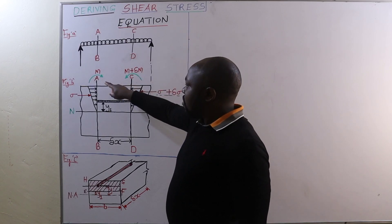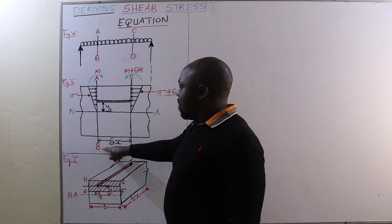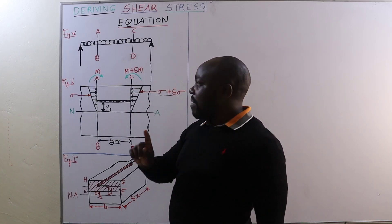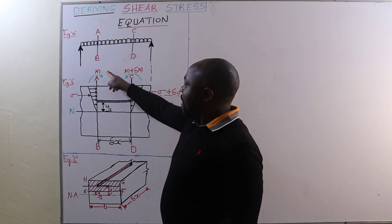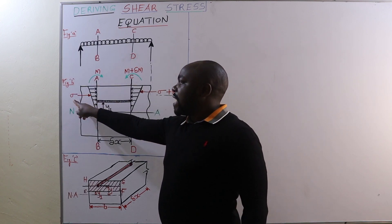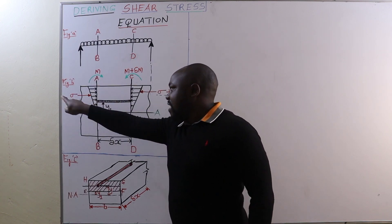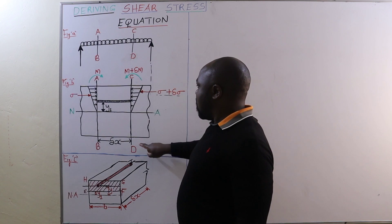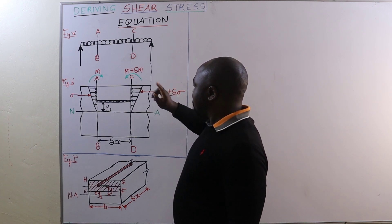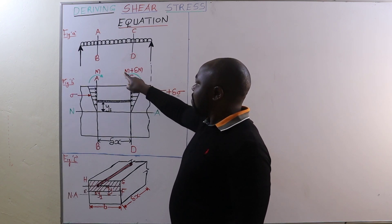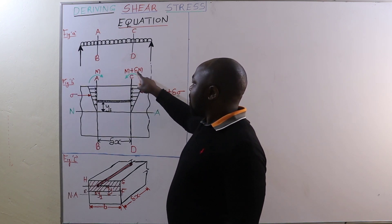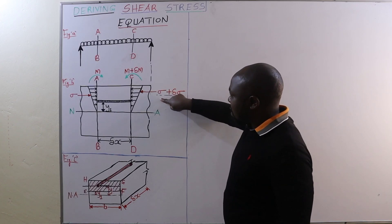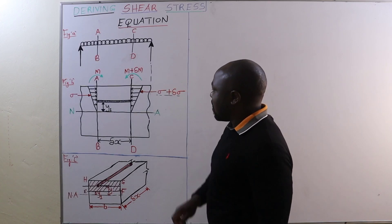Figure B shows the part of this beam whereby on section AB, the beam is subjected to a bending moment of M and a stress. On section CD, the beam is subjected to a bending moment of M plus delta M, as well as the corresponding stress.